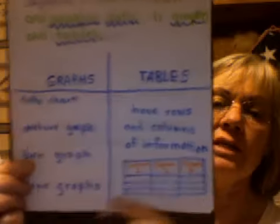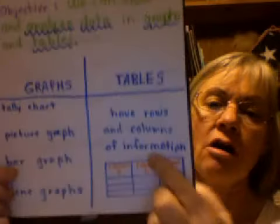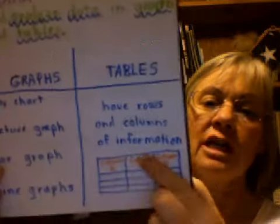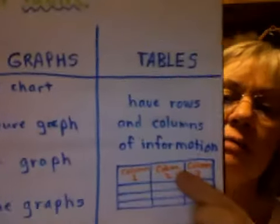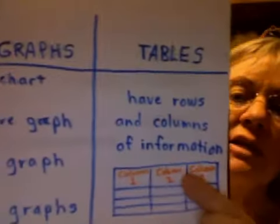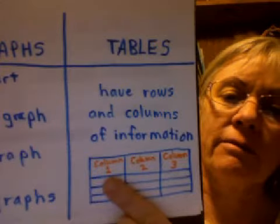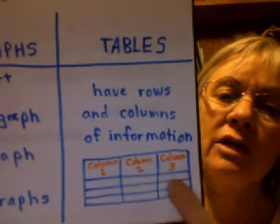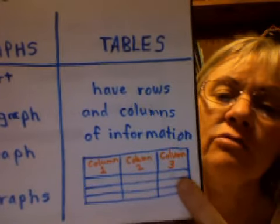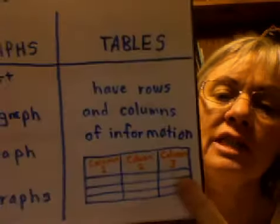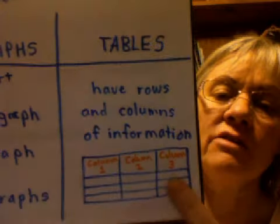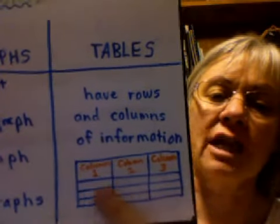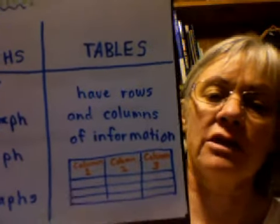Tables are slightly different from graphs. They always have rows and columns of information, and this table is showing that there is a column 1, a column 2, and a column 3, and within each column there are three rows running from right to left horizontally.